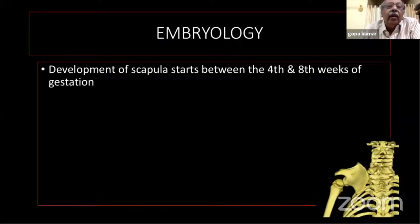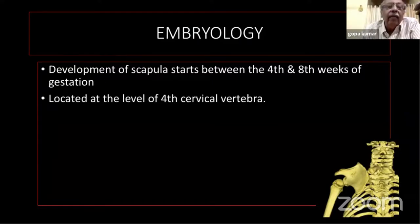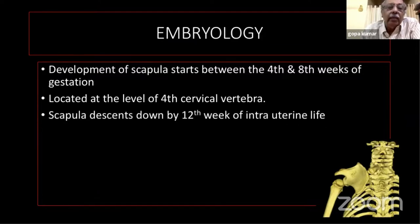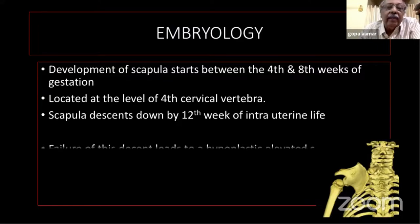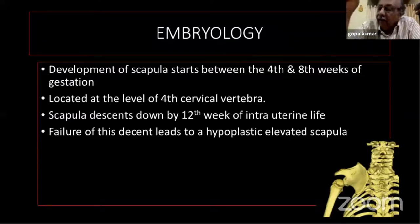It is the commonest congenital anomaly occurring in the shoulder girdle. Regarding embryology, the development of the scapula starts between the fourth and eighth week of gestation in intrauterine life, located at the level of the fourth cervical vertebra. The scapula descends by the twelfth week of intrauterine life to its normal position between T2 and T7. Failure of this descent leads to a hypoplastic and elevated scapula.